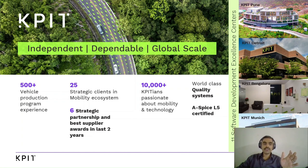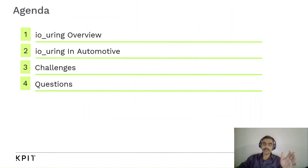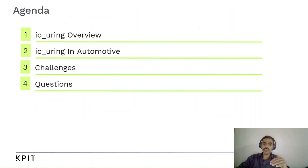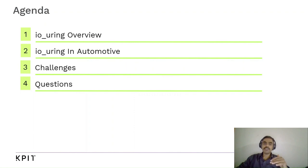Now let's look at the agenda for today. First, we'll start off with an overview of IO-Uring. We'll follow that up with where IO-Uring can actually add benefits in automotive. We'll also look at the challenges which are hindering the adoption of IO-Uring in automotive. Then we'll follow that up with questions.